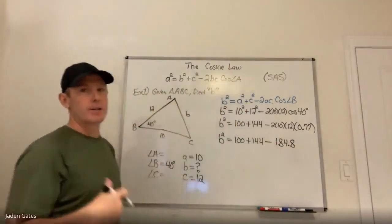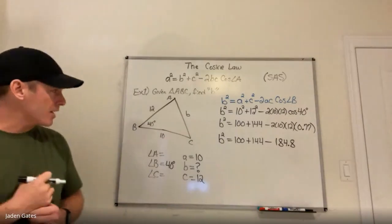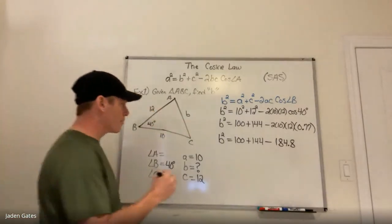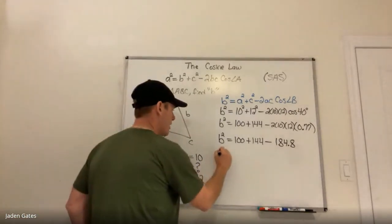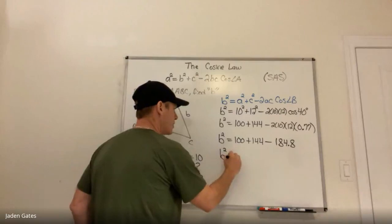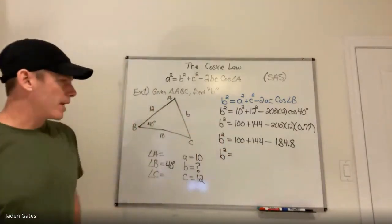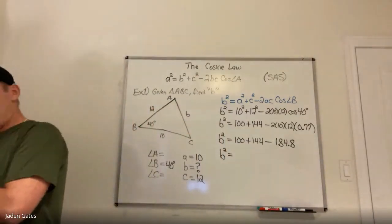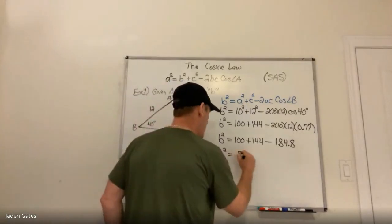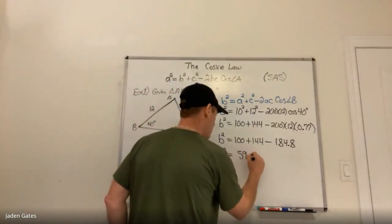The next step in BEDMAS is adding and subtracting. So I take those numbers and put them together: 100 plus 144 minus 184.8, and I get 59.2.